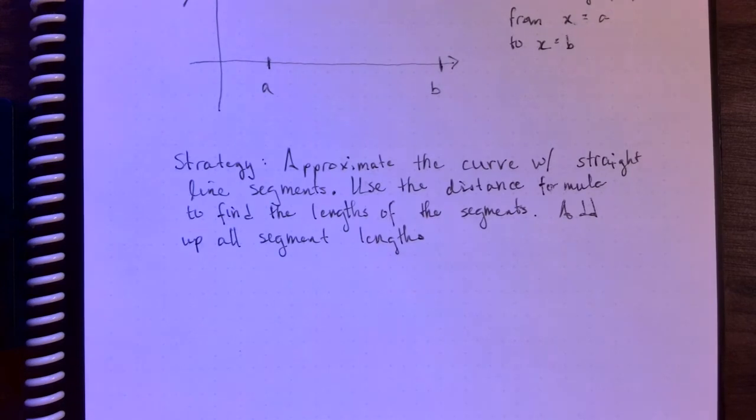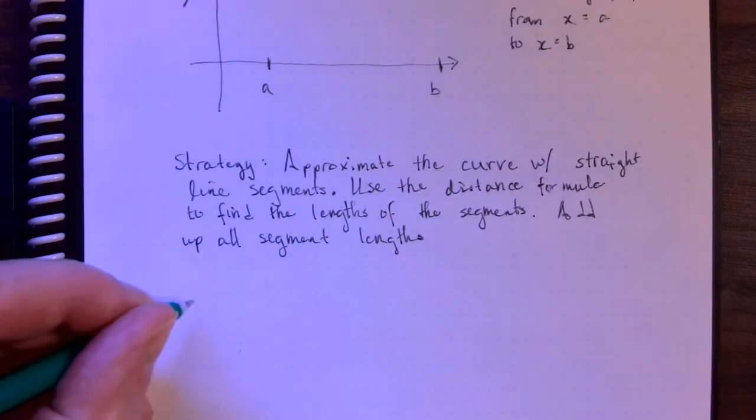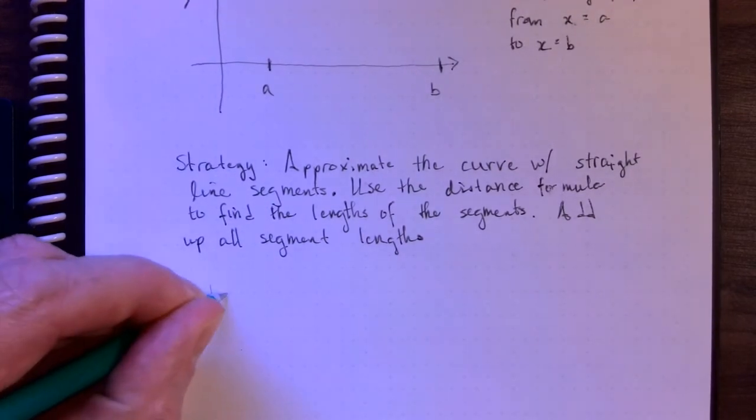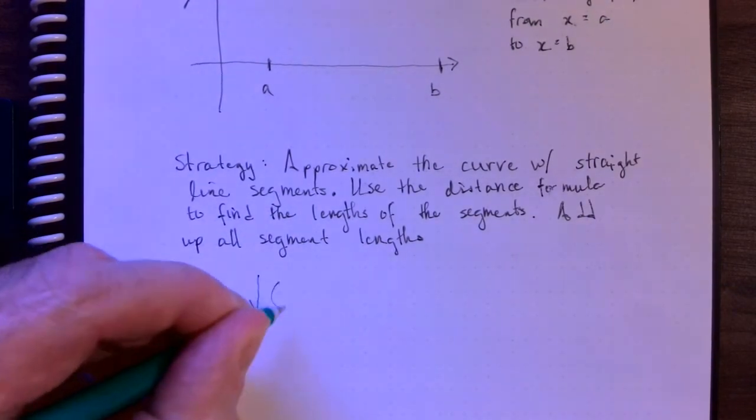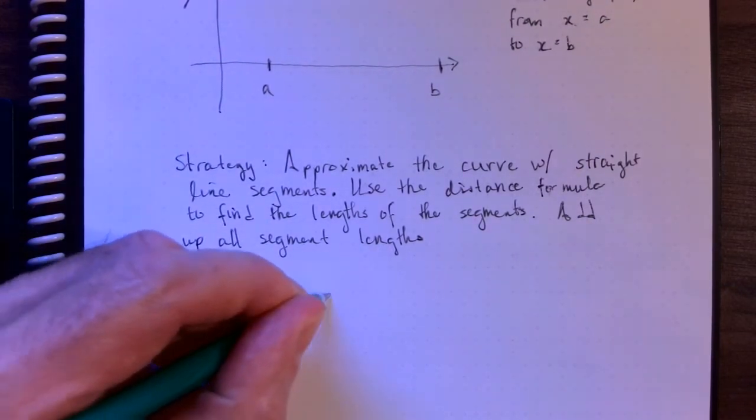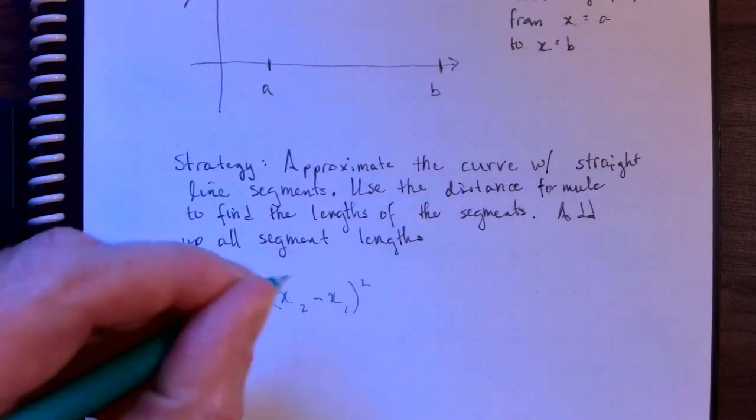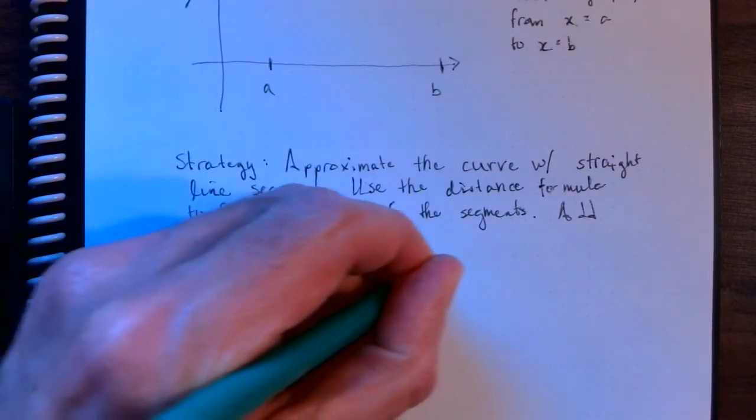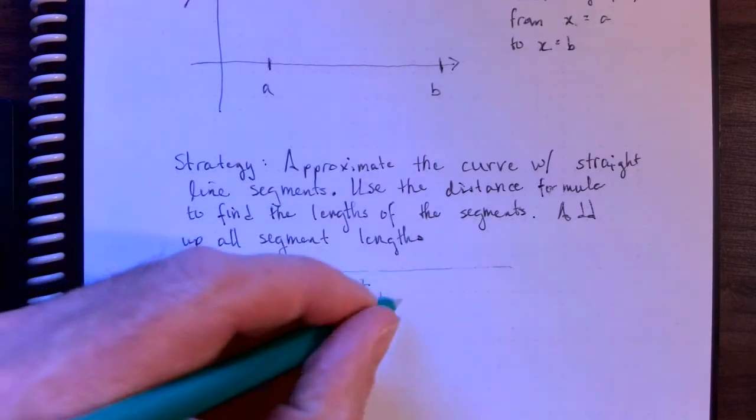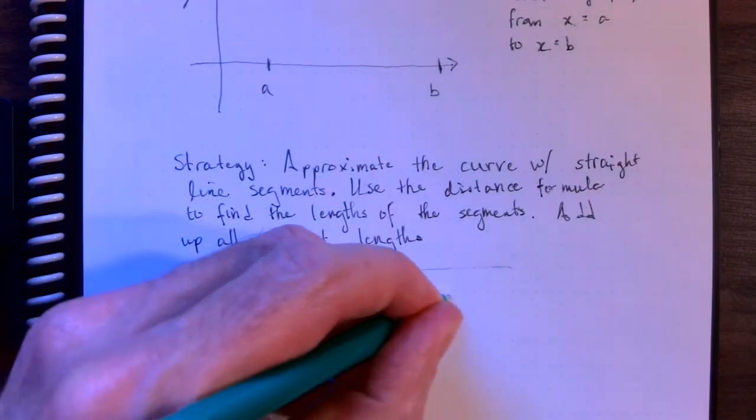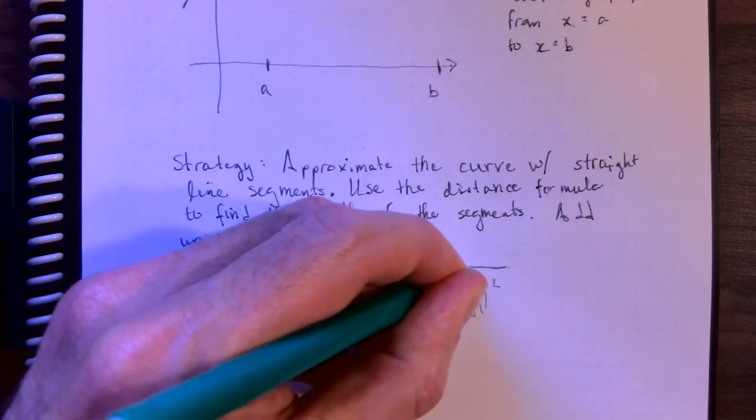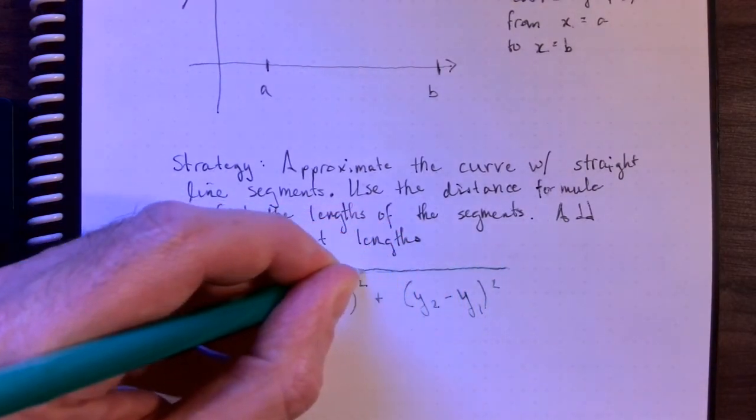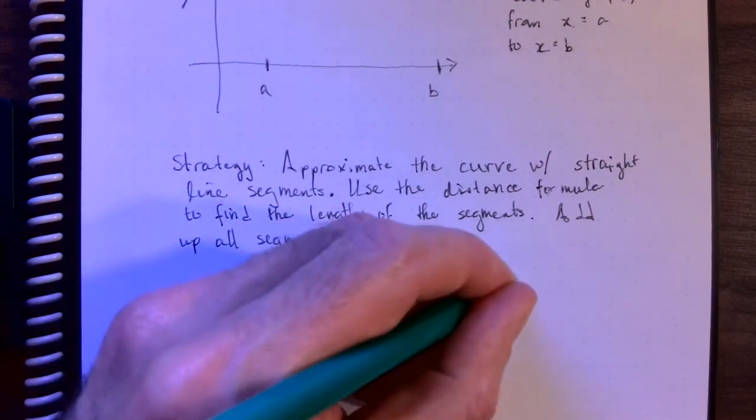The distance between two points, we know that from our algebra classes, right? We take x2 minus x1, square that, and then we take y2 minus y1, and square that. We add both of those together, and we take the square root, and that gives us our distance.